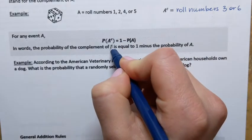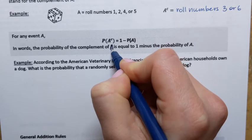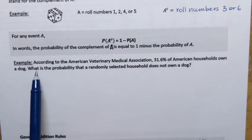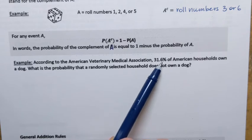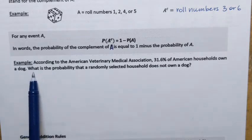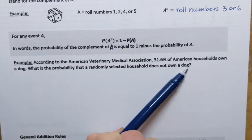Probability of the complement of A, that's a typo, that should say A, like that. Let's just do a quick example to illustrate that. According to the American Veterinary Medical Association, 31.6% of American households own a dog. What is the probability that a randomly selected household does not own a dog?